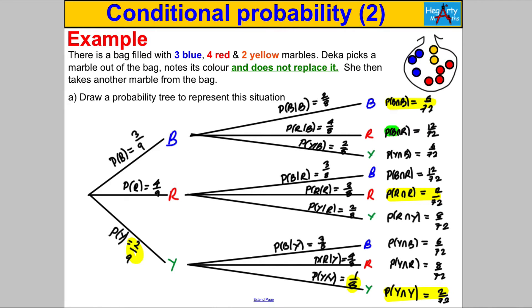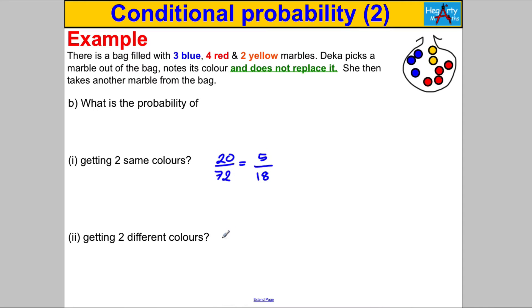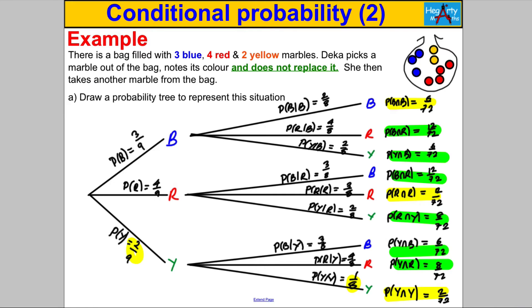Now, what's the probability of getting two different colours? You could add up all the scenarios where they're different, or you could use the complement: since they're either the same or different, the probability they're different is 1 subtract the probability they're the same. That's 1 − 5/18 = 13/18. Alternatively, you could add up those probabilities directly and you'd get 13/18 as before.